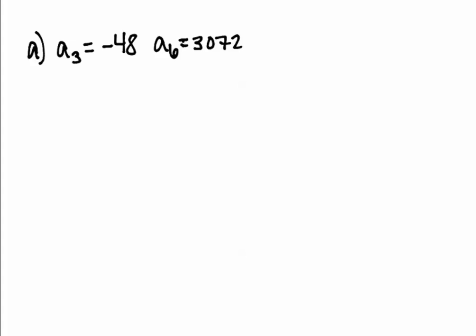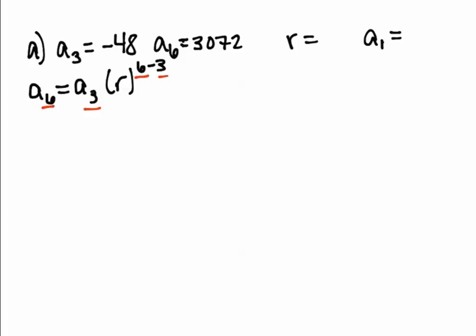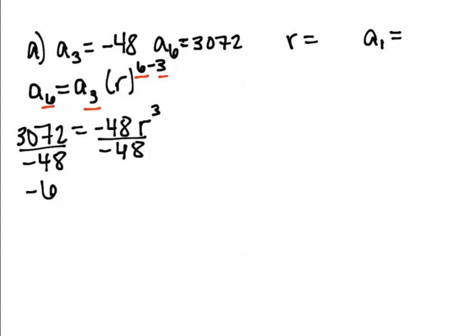Moving to the back, example A: write a rule given two terms. You need the common ratio and the first term. First, find the common ratio using the given terms. Set up: A6 equals A3 times r to the power of 6 minus 3. Swap in the values: 3072 equals negative 48 times r cubed. Dividing both sides by negative 48 gives negative 64 equals r cubed. Taking the cube root of each side, r equals negative 4.